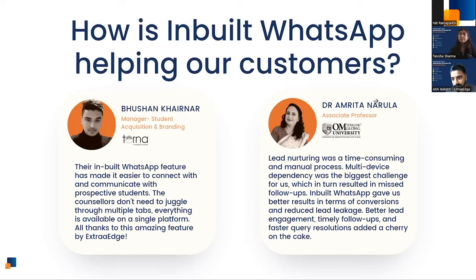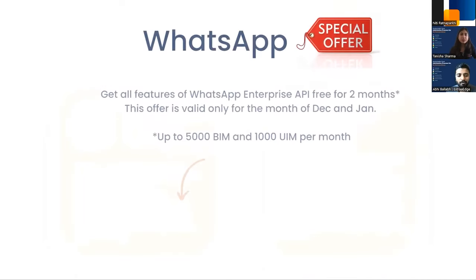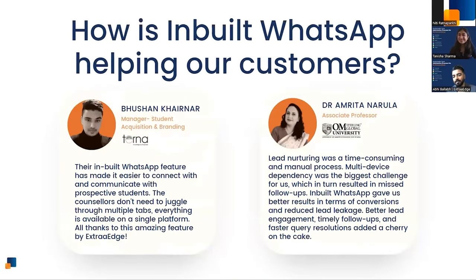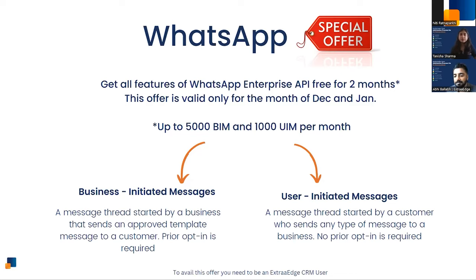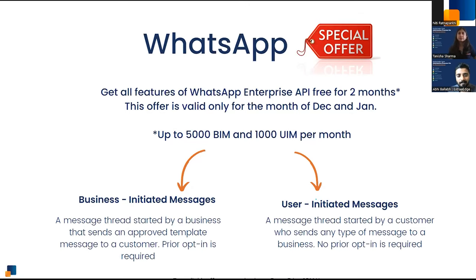The key message is: WhatsApp is there to be utilized, and if you're not using it you're missing probably the most important engagement and outreach channel available. It's not a fad — it's a bandwagon you need to jump on. You need to set up your systems, messaging, and strategy around WhatsApp. Now for the offer: you can get all WhatsApp Enterprise API features free for two months.